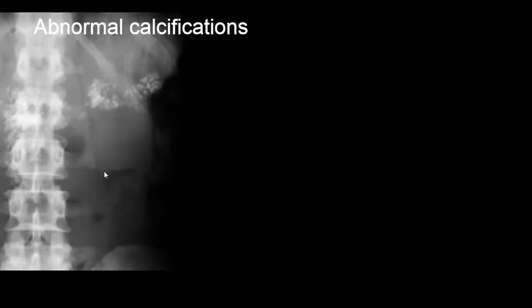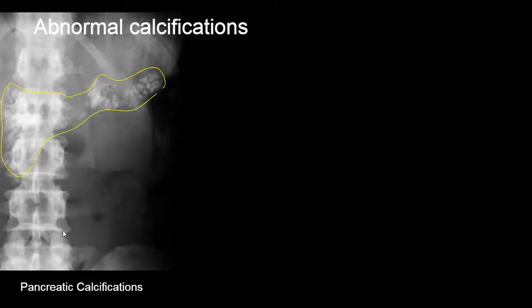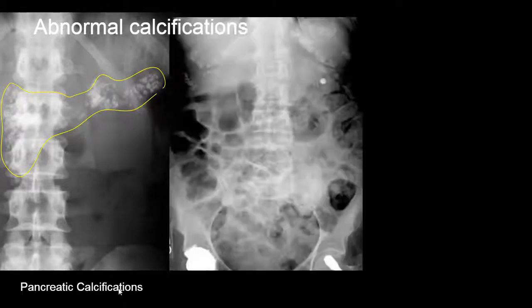Now let's talk about abnormal calcifications that we can see on radiographs. On this first radiograph we see abnormal calcifications centrally, and this is due to pancreatic calcifications from chronic pancreatitis.